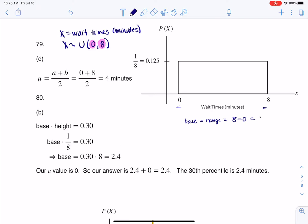So I'm going to go 8 minus 0, which is 8, and that will make my height 1/8, because the height of your rectangle is always that reciprocal. And that's all fine and good.